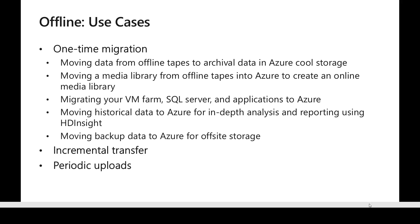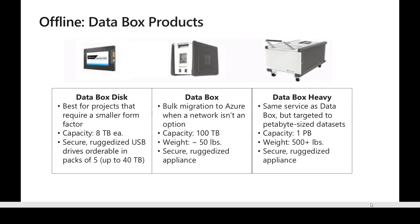If you look at the different product categories, we have the Data Box Disk, which is a very small device with a capacity of around 8 terabytes. A user can order up to five devices in a pack, so if the data transfer is less than 40 TB, we can use this option. This is a secure, rugged device with a USB 3 interface.